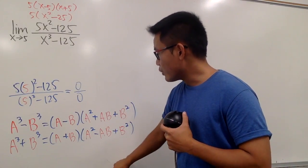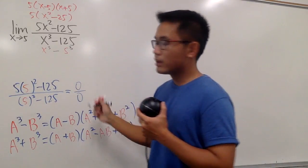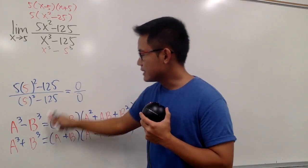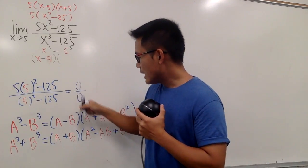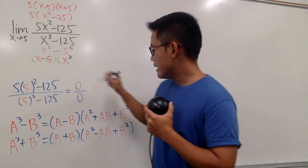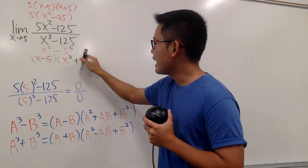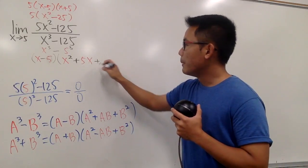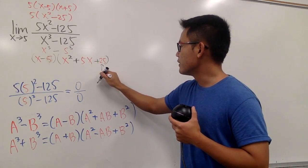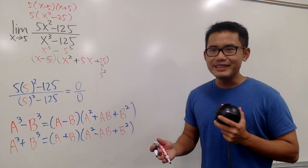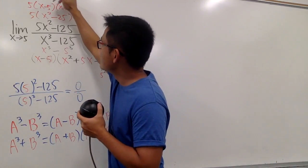We'll use the difference of cubes formula here. We rewrite x³ minus 125 as x³ minus 5³, so a is x and b is 5. The first factor is (x minus 5). Next, a² gives x², then ab gives 5x, and b² gives 25. So the denominator factors as (x minus 5)(x² plus 5x plus 25). After factoring, we're so lucky — we have (x minus 5) on the top and (x minus 5) on the bottom, so we can cancel them out.